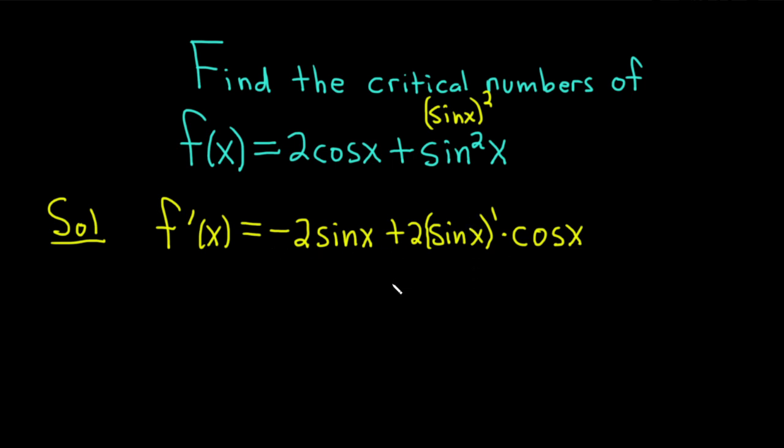So this is never undefined. The only thing left to do is set it equal to 0 and solve for x. Again, critical numbers are numbers in the domain of the function where the derivative is undefined or at 0. This derivative is never undefined so now we're setting it equal to 0 to find out what possible critical numbers we have.